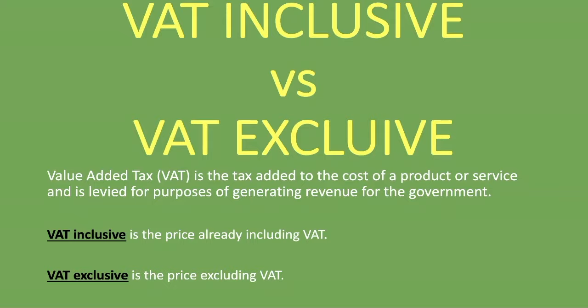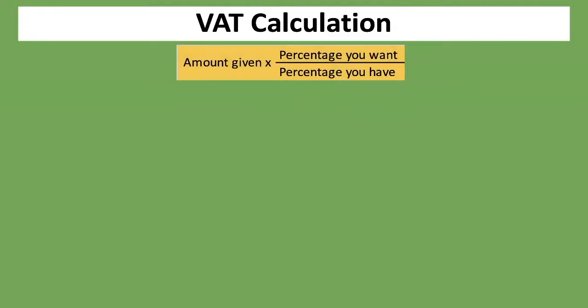So let's go through some calculations. The formula I'm going to show you is very easy and you should be able to remember it after going through this lesson. The formula is: the amount that you are given, multiplied by the percentage that you want, divided by the percentage that you have. We've gone through a similar lesson before — you can check it out in the link in the description below. But in this lesson, you should be comfortable enough doing VAT calculations.